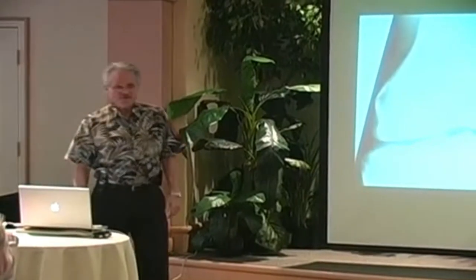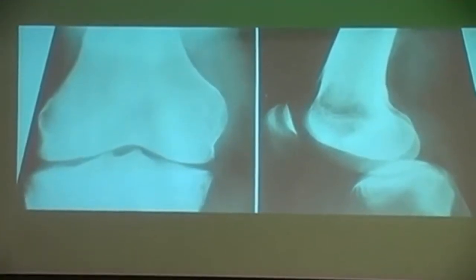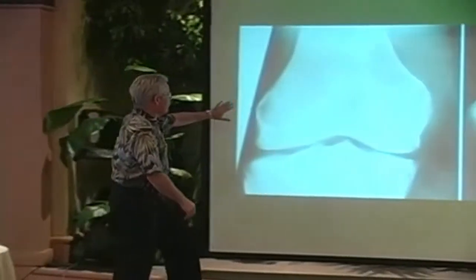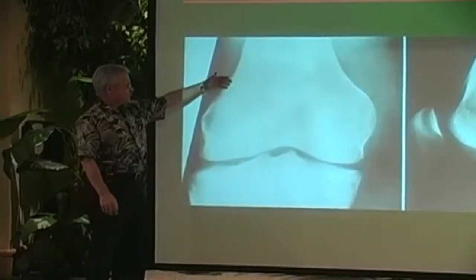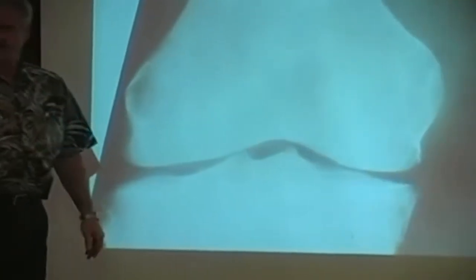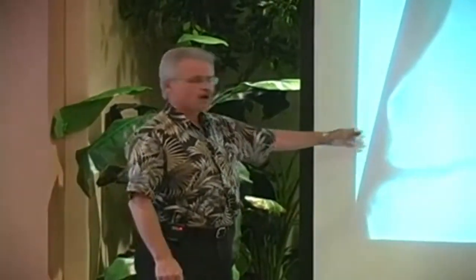This is what a normal joint looks like — this happens to be a knee joint. X-rays allow us to see the bony part but not the other stuff. We have the upper bone going up to the knee and the lower bone going down to the ankle. You see a space between the two bones — what's in that space? Cartilage. It's tough fibrous material with no calcium, so we can't see it on x-ray, yet it's holding weight. Consider it a sturdy sponge.